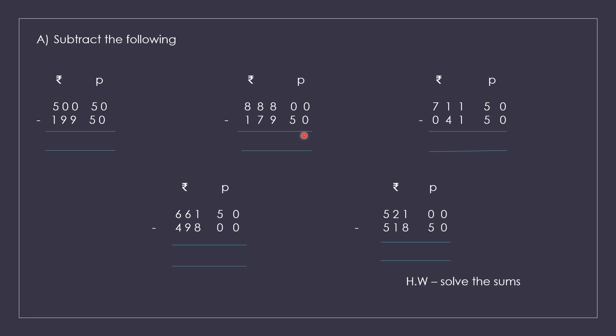Next you have 711 rupees 50 paise minus 41 rupees 50 paise. So what is the answer?